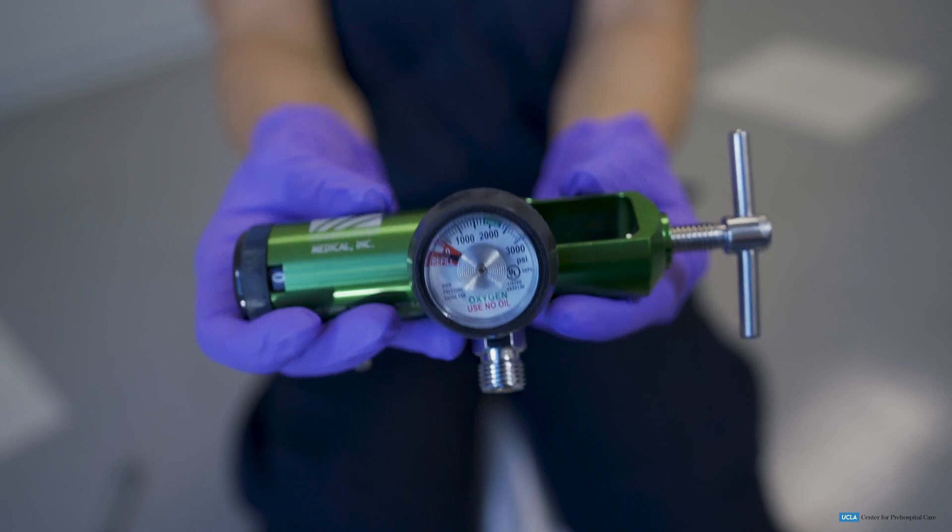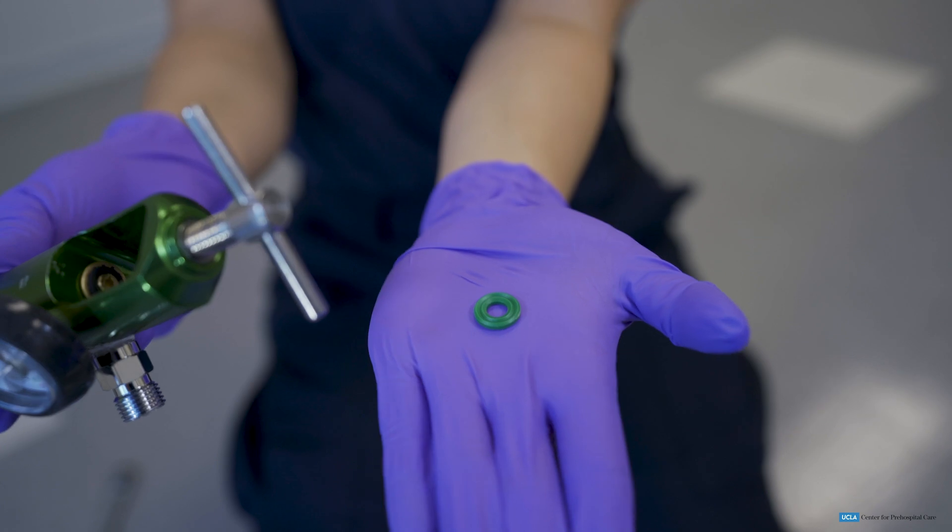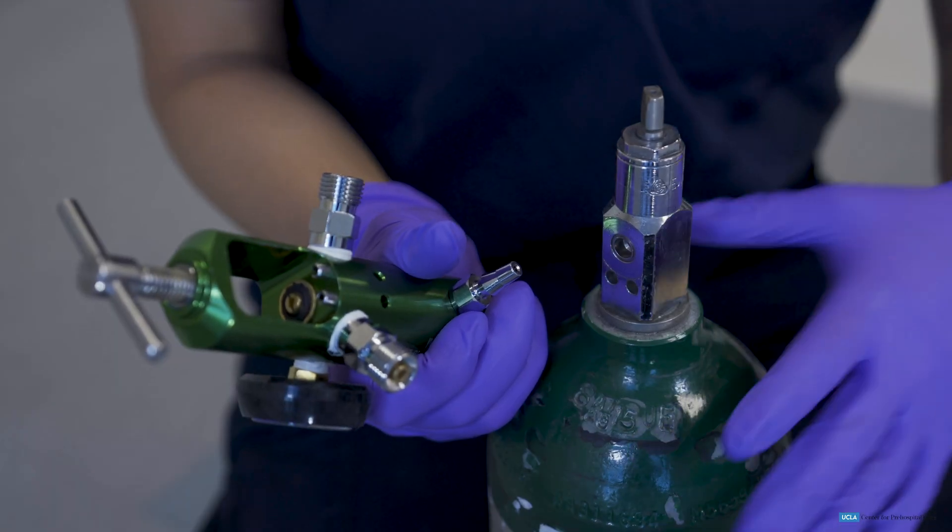Next, the EMT will assemble the tank and regulator. To do this, place the regulator on the tank, ensuring the presence of an O-ring and the alignment of the pins.